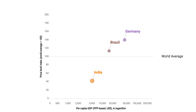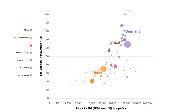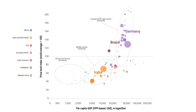Let's bring in other economies from Africa, Asia and the Pacific, the Commonwealth of Independent States, Eurostat, OECD, Latin America, the Caribbean, and Western Asia. Now you can see more clearly the relationship between price levels, GDP per capita of economies, and the real size of economies. You may spot some noteworthy patterns, by region, or by specific groupings of economies.